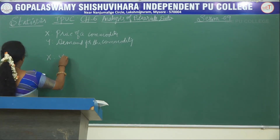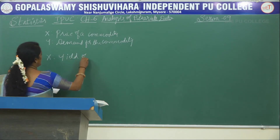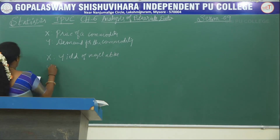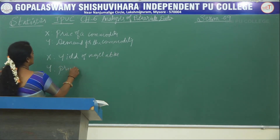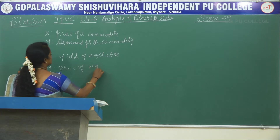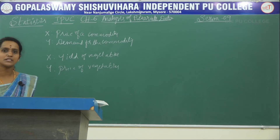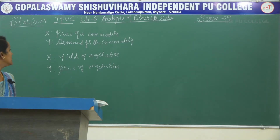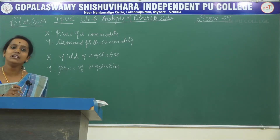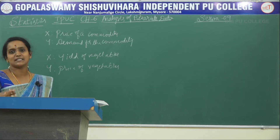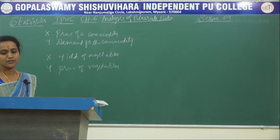Second example: let X be the yield of vegetables and Y be the price of vegetables. Here, the yield of vegetables is the independent variable because depending on the yield, the price of vegetables will increase or decrease. So, yield of vegetables is the independent variable and price of vegetables is the dependent variable.